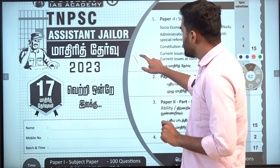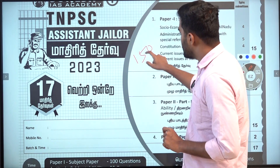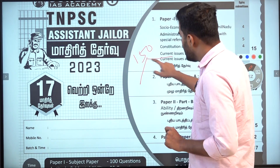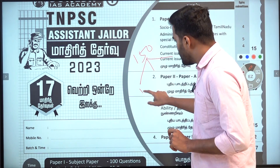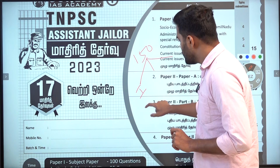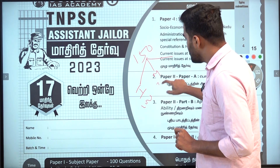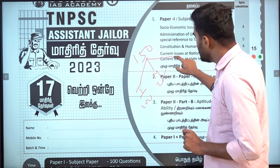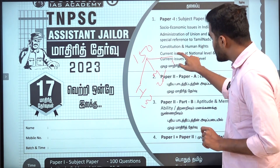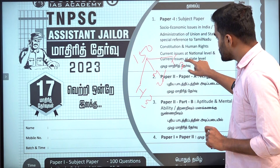How do you spread the paper? The paper is 100, the max is 25, and the Tamil is 25.